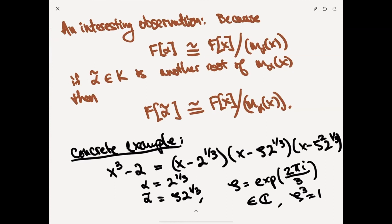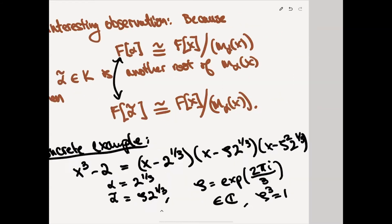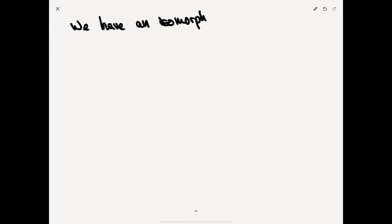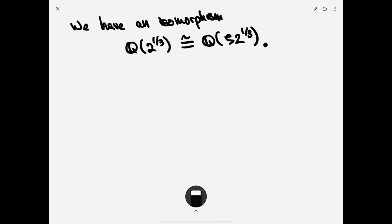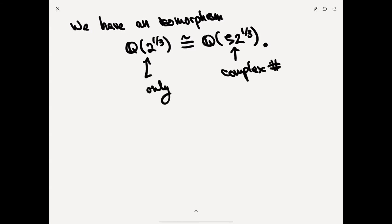So by this proposition, we have an isomorphism between Q adjoin 2^{1/3} and Q adjoin zeta · 2^{1/3}. This is maybe a little counterintuitive, because this one involves complex numbers — zeta · 2^{1/3} is a complex number — while Q adjoin 2^{1/3} involves only real numbers. But they are isomorphic as fields.